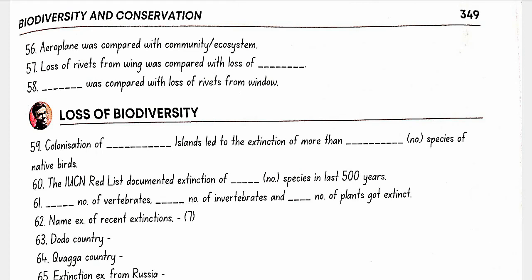The Rivet Popper hypothesis was given by Paul Ehrlich, a Stanford ecologist. Species were compared with rivets of aeroplanes; flight safety was compared with proper functioning of the ecosystem; the aeroplane was compared with the community or ecosystem. Loss of rivets from the wing was compared with loss of key species driving major ecosystem functions; loss of rivets from the window was compared with species not contributing much to the ecosystem.